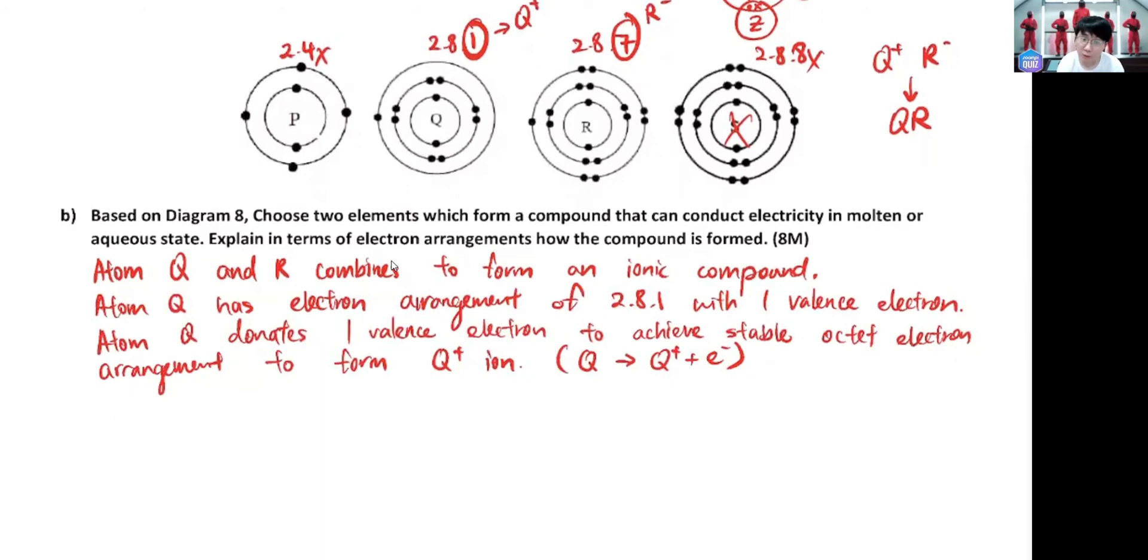Okay, let's talk about R. So atom R has electron arrangement of 2.8.7 with seven valence electrons. What do we want to do with the seven valence electron? Receive. So atom R receives one electron to the outermost shell.